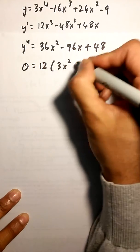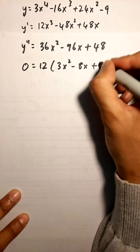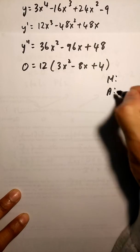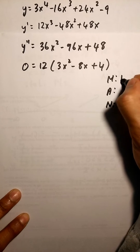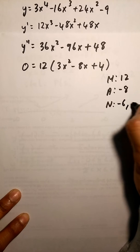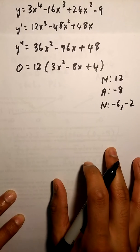Over here I can do my MAN method with a value, so my M is 3 times 4 which is 12, my A is negative 8. The numbers are negative 6 and negative 2.